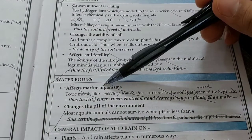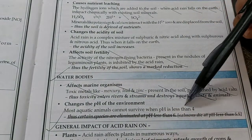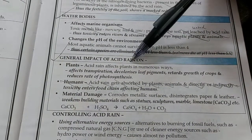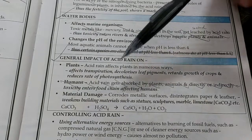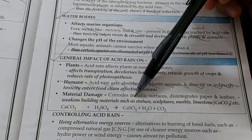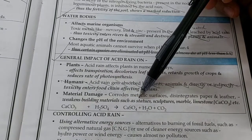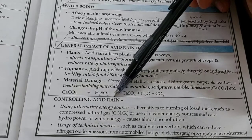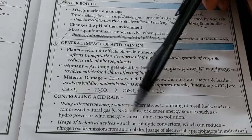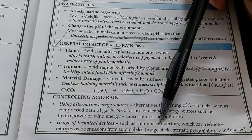Acid rain affects marine organisms — most aquatic animals cannot survive when pH is less than 4. Plants are harmed by acid rain and even humans are harmed. There is also material damage: if acid rain falls on marble structures like the Taj Mahal or metal iron gates, they will get corroded. To control acid rain, start using alternative fuels like solar energy, wind energy, or CNG compressed natural gas, and also use catalytic converters in automobiles to reduce polluting gases from exhaust. We can also use electrostatic precipitators to reduce air pollution.